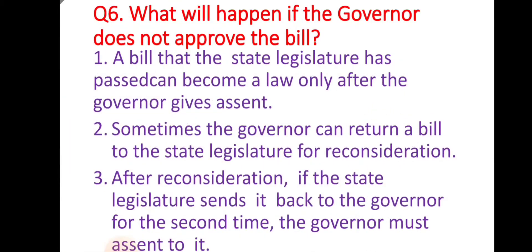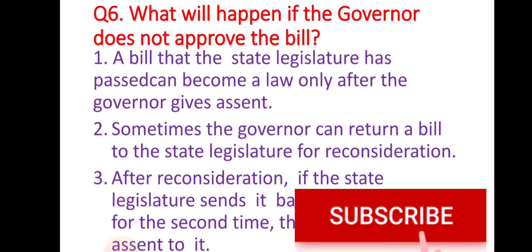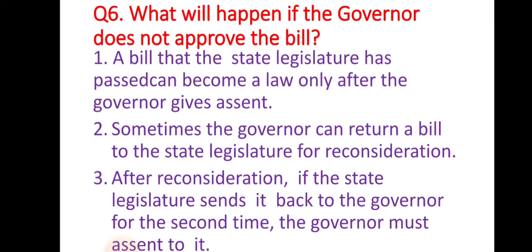Next question: What will happen if the governor does not approve the bill? A bill that the state legislature has passed can become a law only after the governor gives assent. Sometimes the governor can return a bill to the state legislature for reconsideration. After reconsideration, if the state legislature sends it back to the governor for the second time, the governor must assent to it.